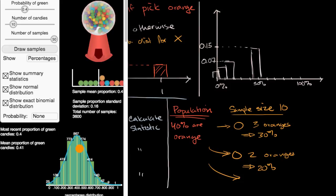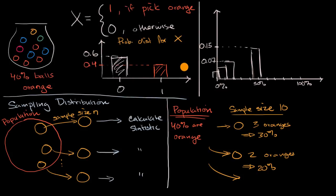But the main idea is to get an intuition for how a sampling distribution is different from just a traditional probability distribution. That in a sampling distribution, you're taking samples from a population, calculating some statistic for that sample, and what you're plotting in the sampling distribution are the various probabilities, the various likelihoods of the outcomes for those statistics in those samples.